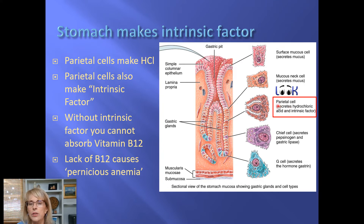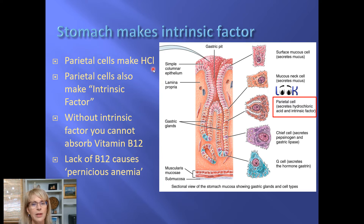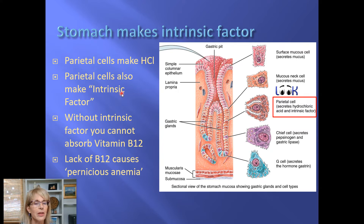We also have parietal cells. Parietal cells are the cells that make hydrochloric acid. They make hydrochloric acid using an active transport pump called the proton pump. When people have problems with heartburn, they use medications that specifically suppress the proton pump — called proton pump inhibitors. Proton pump inhibitors keep the parietal cells from making as much hydrochloric acid.